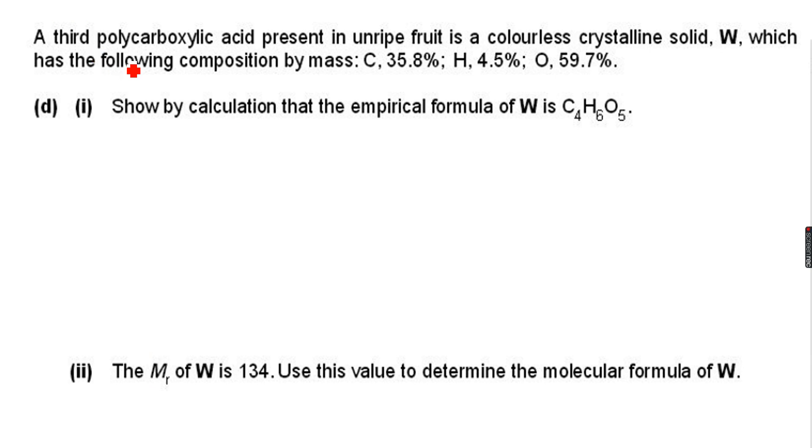Now let's do the last example. A third polycarboxylic acid - there was something earlier in this question but we are not dealing with that. Let's just go straight to compound W. The percentage composition by mass is: C 35.8%, H 4.5%, and O 59.7%.